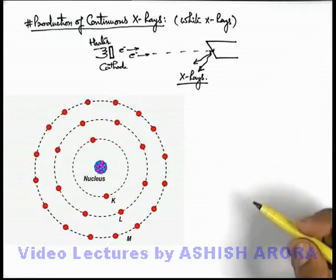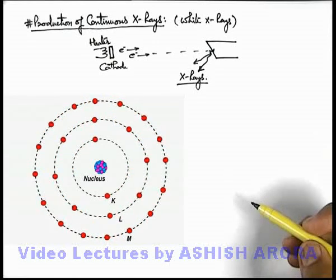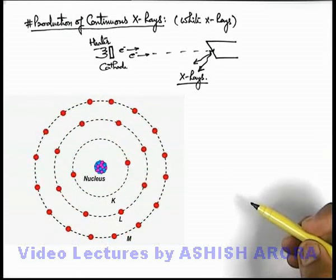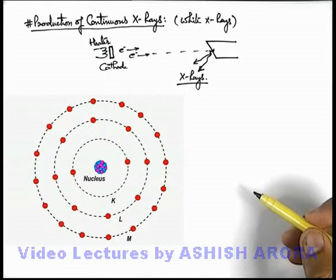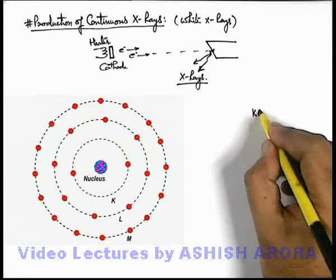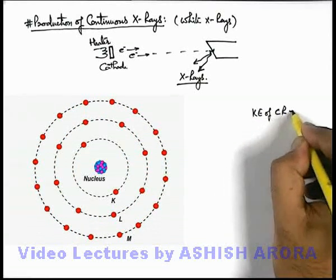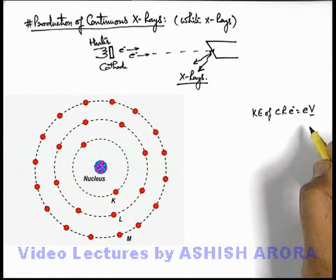We can see in this situation, according to Maxwell's theory we know that a charged particle whenever accelerated, it loses its kinetic energy in form of electromagnetic radiations. So in this situation the kinetic energy of cathode ray electron can be simply written as eV where V is the potential difference applied across the discharge tube.